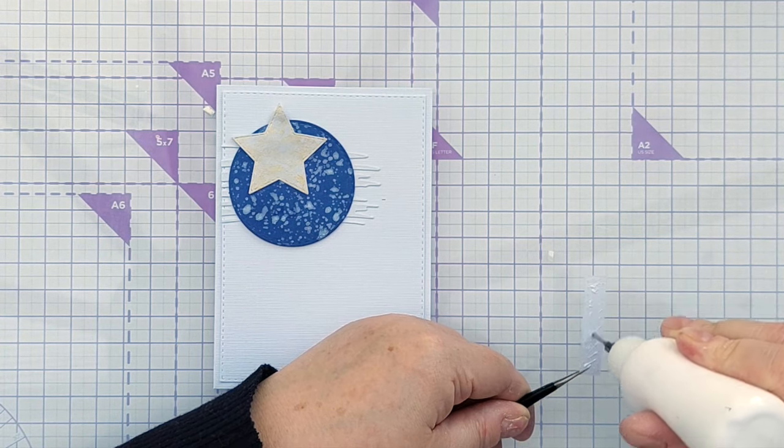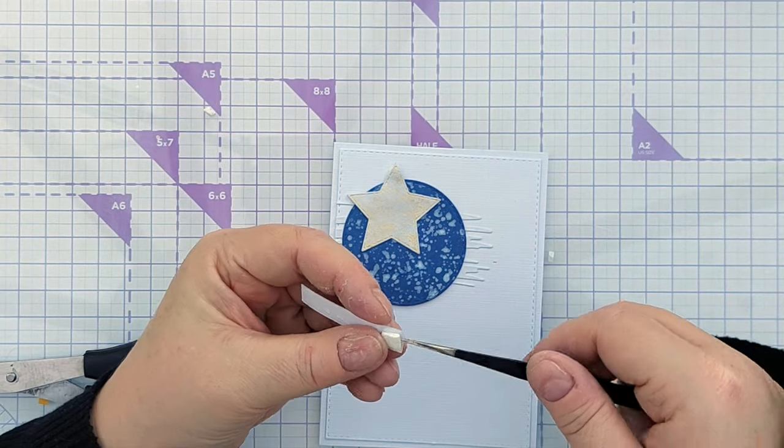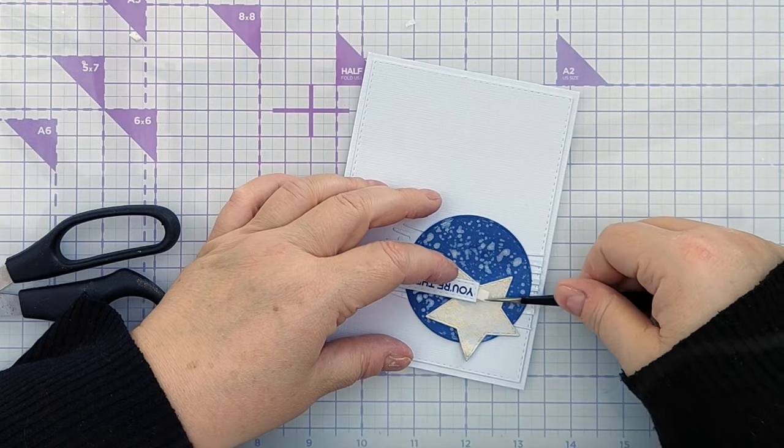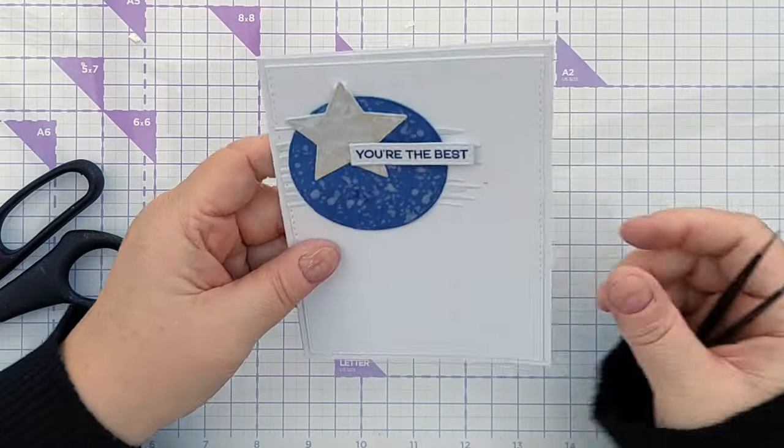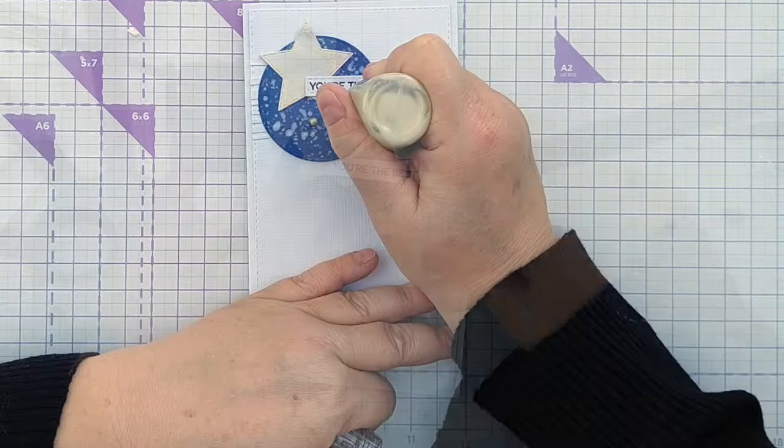I added some matte gel medium again to the back of this and a couple of pieces of foam tape. I overlapped it with the star and the circle placing it in the middle of the card horizontally and then as a finishing touch I added some gold nouveau drops and that was this card finished.